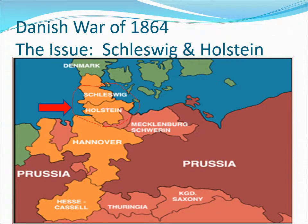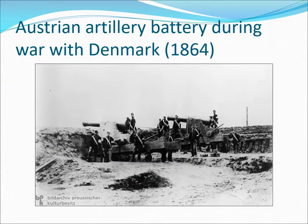In 1864, there was the Danish War, in which Austria and Prussia fought together against Denmark over two provinces lying between Denmark and the German states: Schleswig and Holstein. Prussia's reformed army performed very well and they won. But Bismarck had an ulterior motive — his whole purpose was to use Austria as an ally but to actually ruffle her feathers.